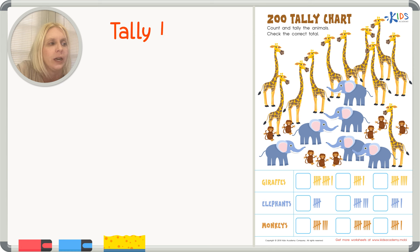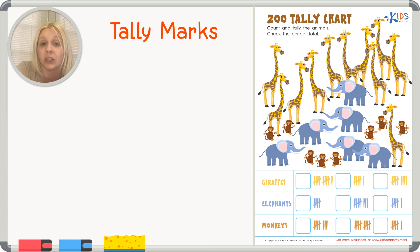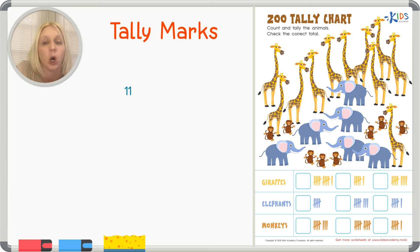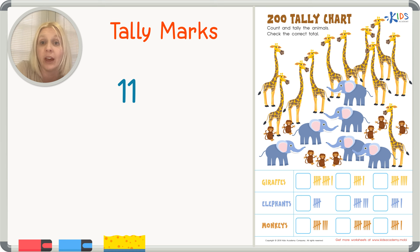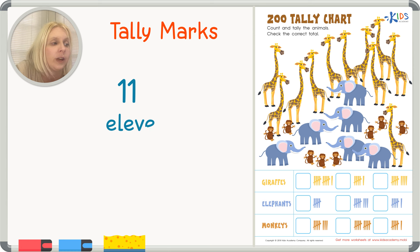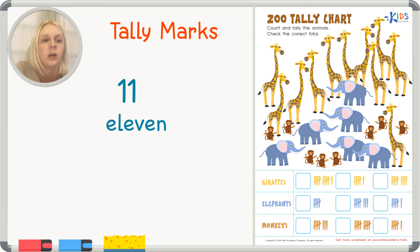I want you to look over here at the whiteboard. I'm going to write tally marks on the board and really explain why we have tally marks and how they help us organize information. Let's say you have 11 objects — 11 elephants, or 11 of whatever you can imagine. These are what tally marks are: basically they are marks that tell us how many of each object there are.